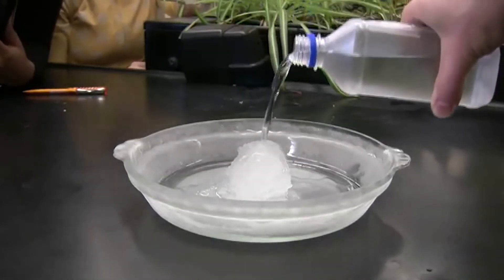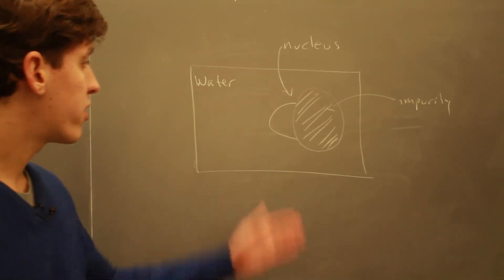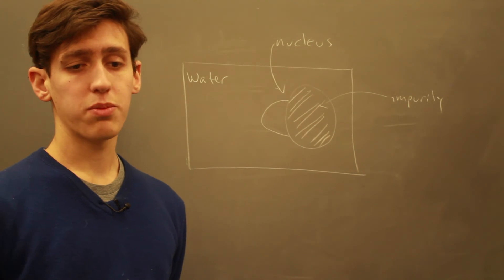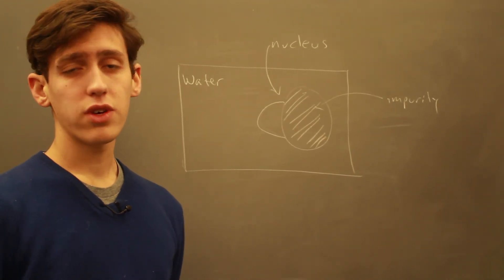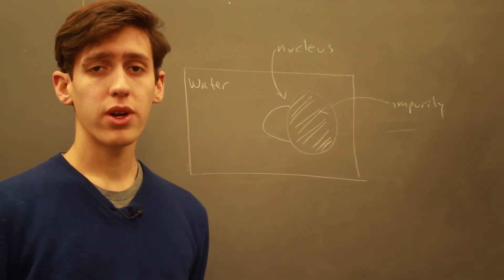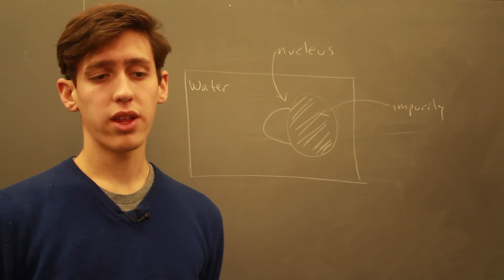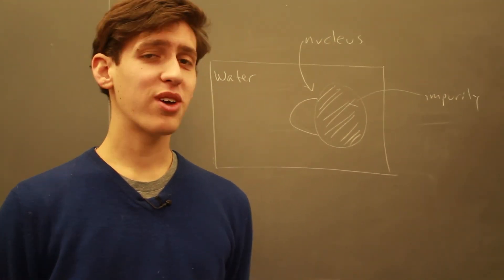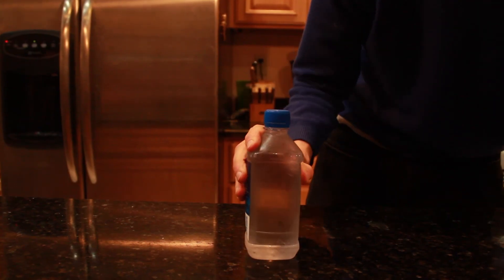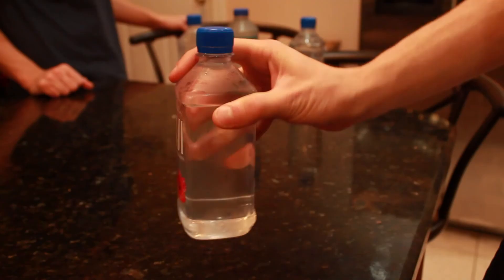How do these impurities help the water crystallize? When a nucleus forms on top of an impurity — called the nucleation site — the surface area of the nucleus that is exposed to the water is drastically reduced. So the surface area energy is reduced and the energy barrier to nucleation becomes much lower. This is why we don't see supercooled water all the time in daily life: water is not usually totally pure. I hope you think supercooled water is as cool as I do.